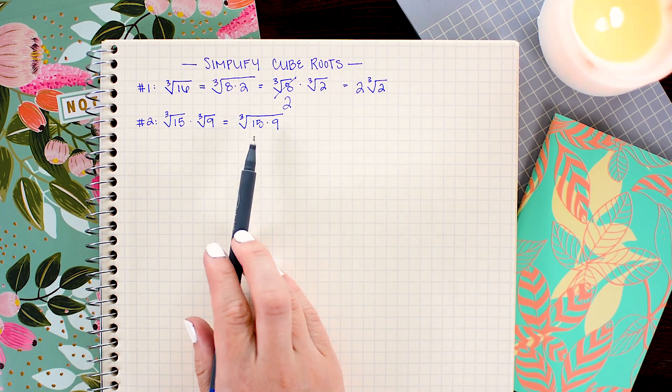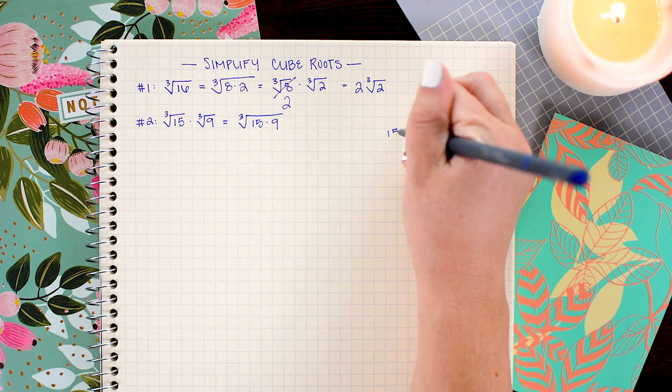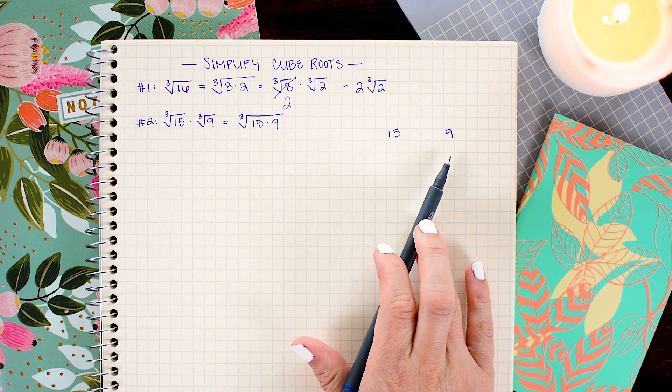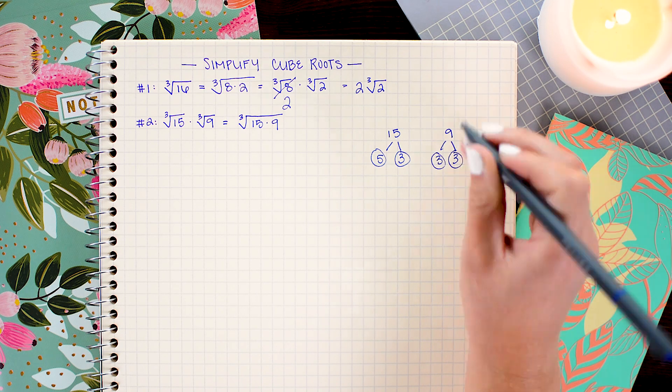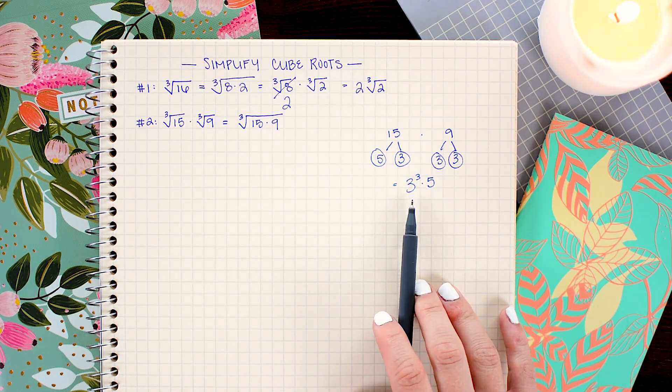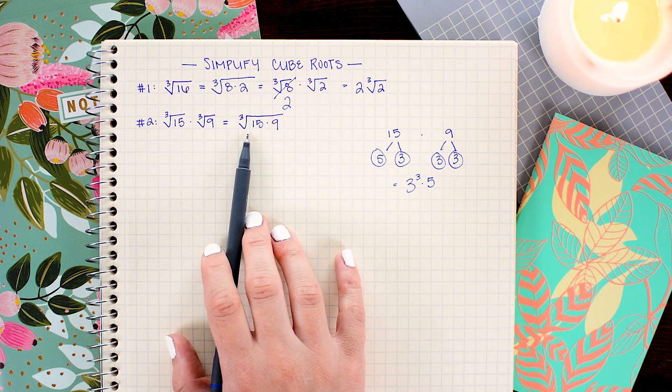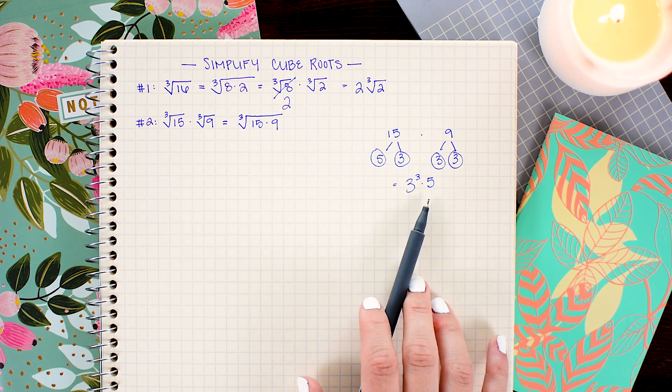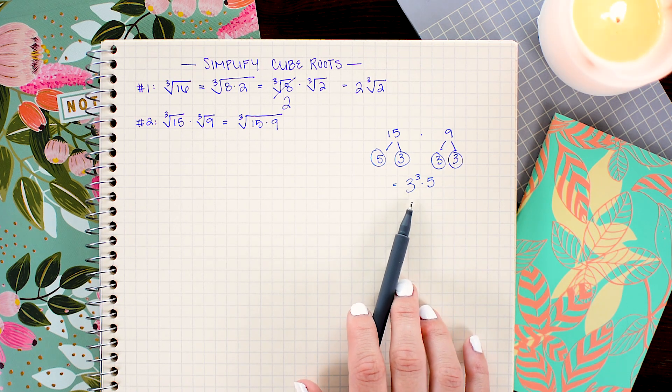And instead of multiplying these out, I'm just going to use a little factor tree to help me simplify this. I'm going to make factor trees for both 15 and 9. And I know that the product of those two factor trees will be the product of their prime factorizations. And because I got a cube number in my prime factorization, I know that I can reduce this cube root because a cube and a power of 3 are inverses of each other. So I'm just going to replace 15 times 9 with the prime factorization of 3 cubed times 5.